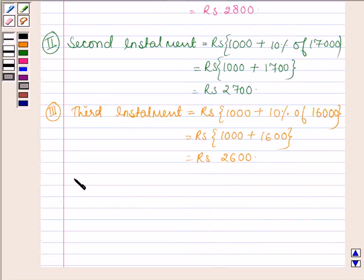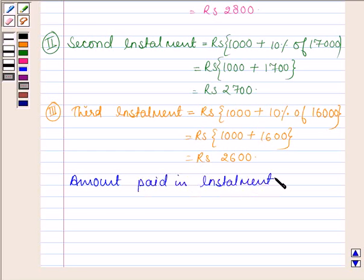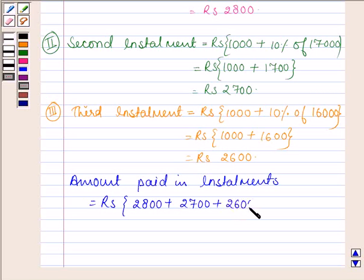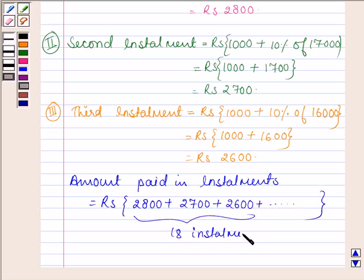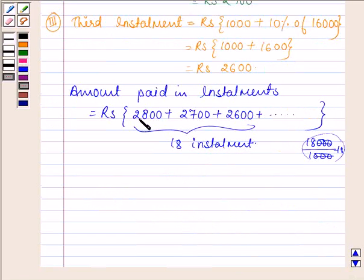So the amount paid in installments is equal to Rs 2,800 plus Rs 2,700 plus Rs 2,600 and so on. These installments are 18 in number, since he has to pay Rs 18,000 and each installment principal is Rs 1,000. Therefore he has to pay 18 installments. The sum of this series will be found with the help of the sum of an AP series.